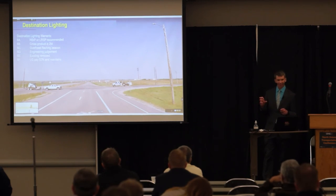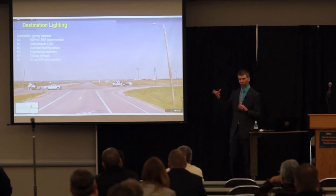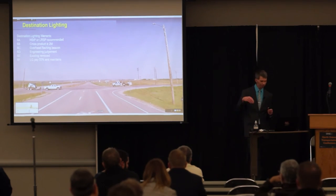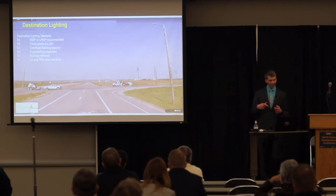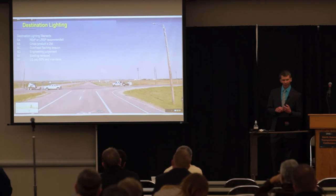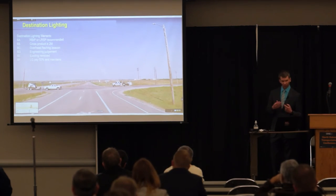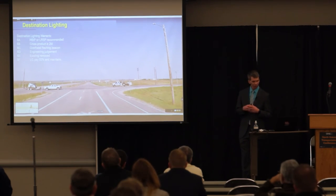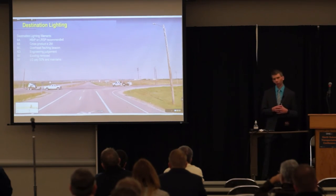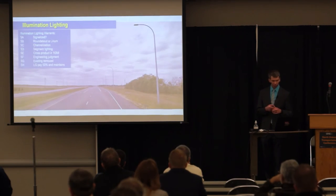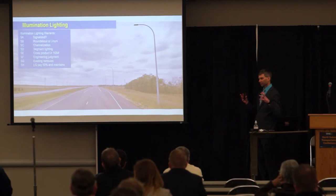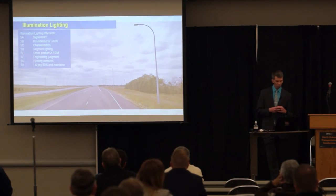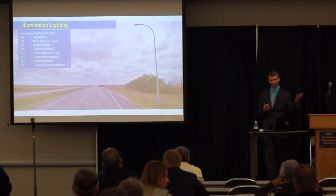One example is destination lighting — a light placed at one quadrant of an intersection to inform the traveling public that a major intersection is coming up. On the left side of the page are our lighting warrants for destination lighting. The cross product — the AADT of the minor road multiplied by the AADT of the major road — if greater than 2 million, it meets the warrant for a destination light. There is also illumination lighting, which lights an entire intersection, with similar warrants and a cross product criterion. We also light our roundabouts and other major intersections.